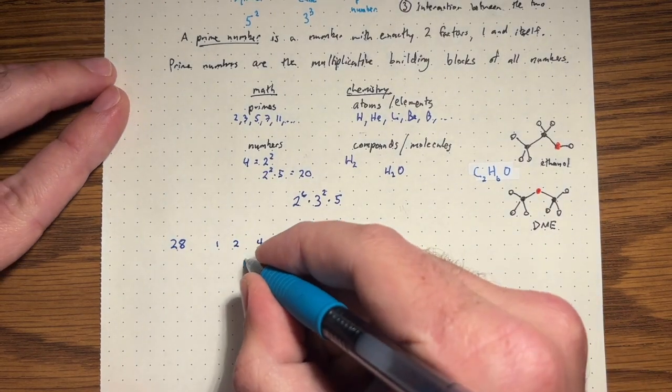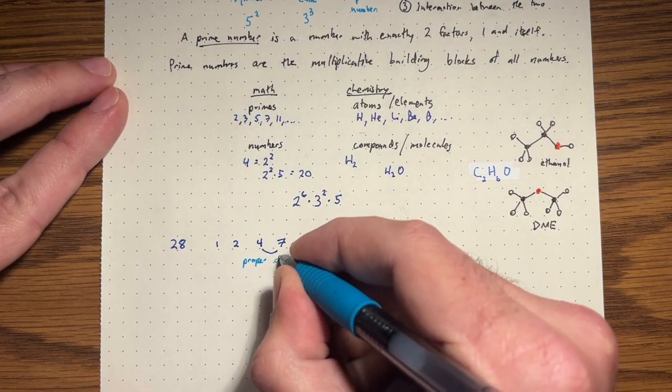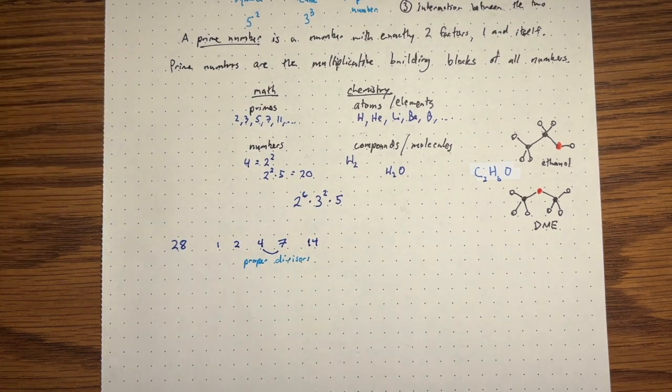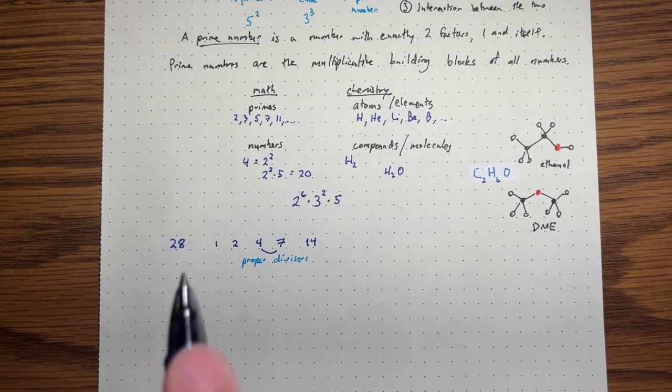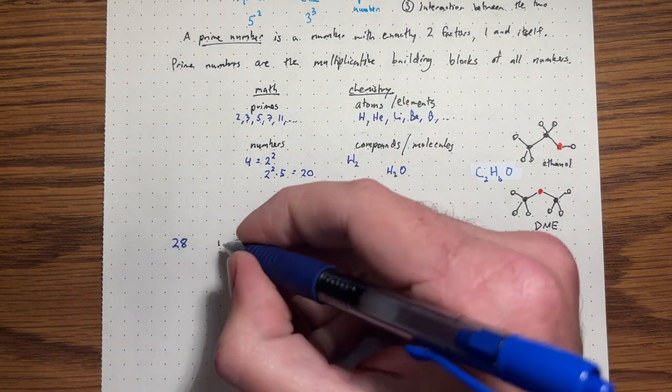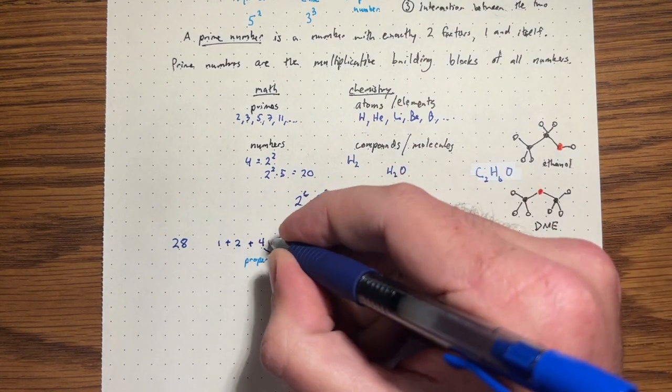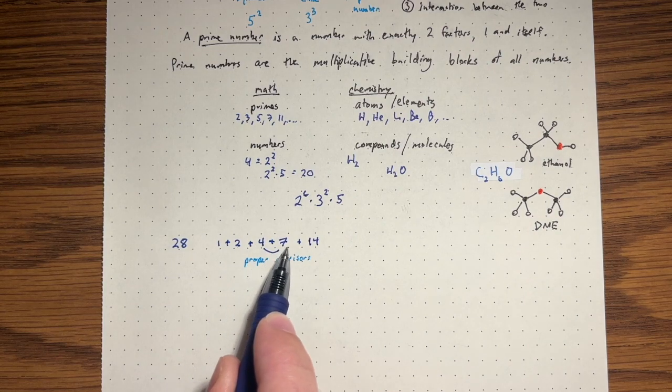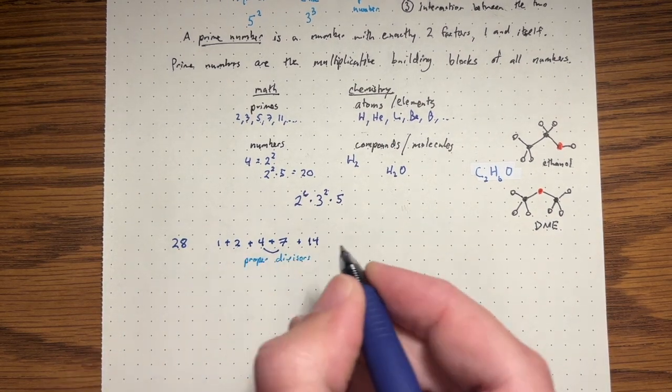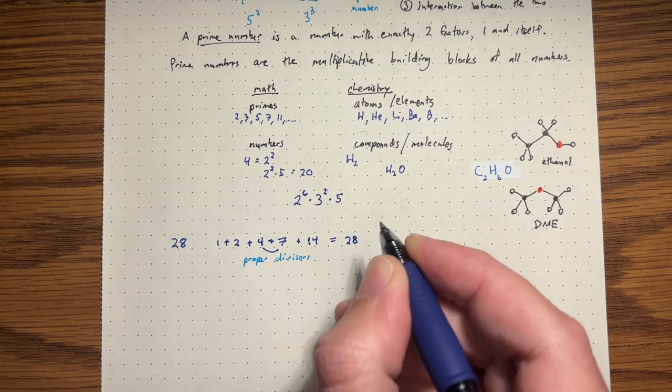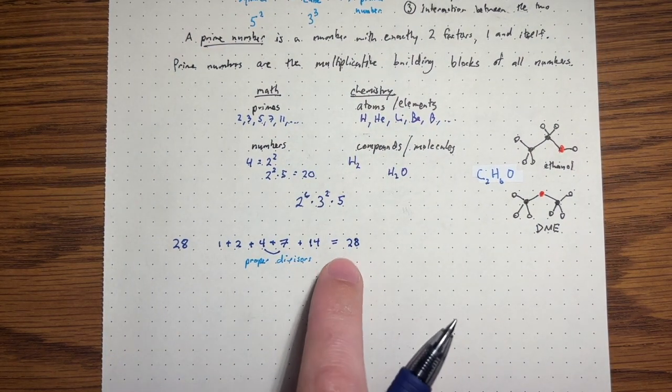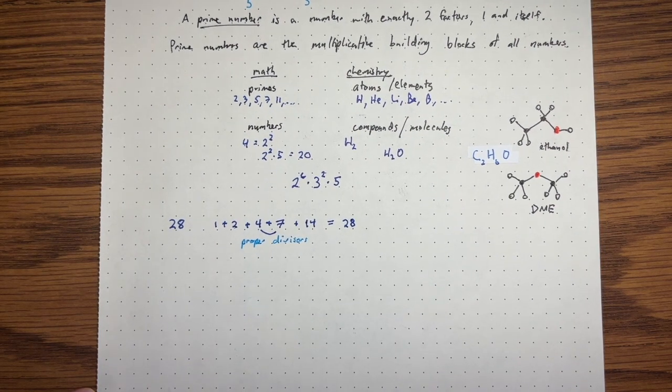So we'll just take the proper divisors. So proper divisors means all the divisors excluding the number itself. And what are we going to do with these? Let's add them up. So add up one plus two plus four plus seven plus 14. What do we get? We get three, seven, 14, 28. So if we take the proper divisors of 28 and add them up, we get the number itself.